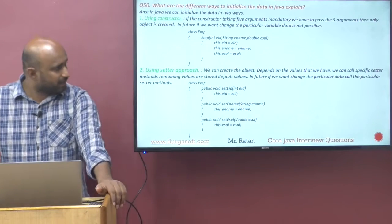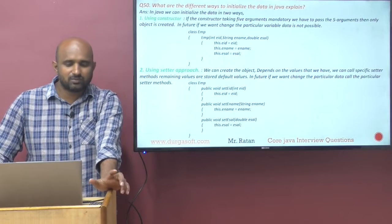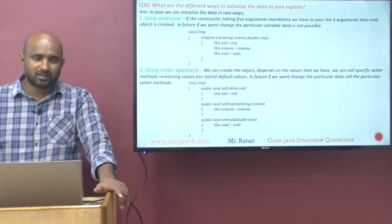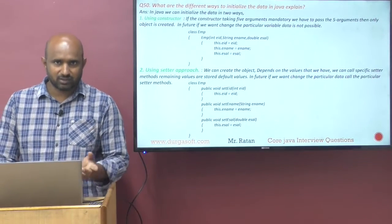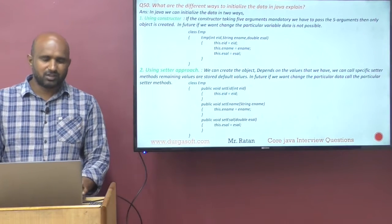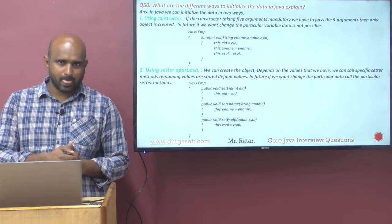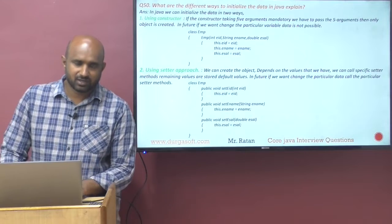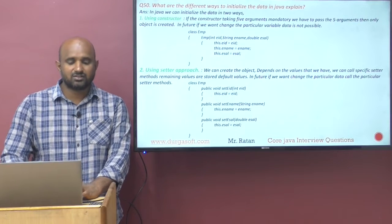The difference between these two approaches: constructor injection is mandatory injection. If the constructor expects five arguments, we must pass all five arguments for the object to be created. Setter injection is for optional dependencies — we create the object using the default constructor and call only the setter methods for the values we have. Remaining values are stored as defaults and can be updated later.